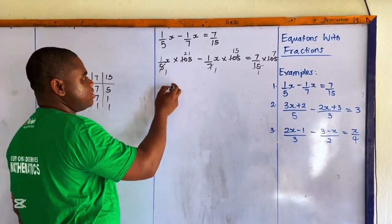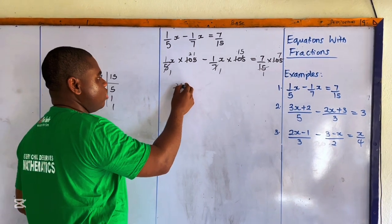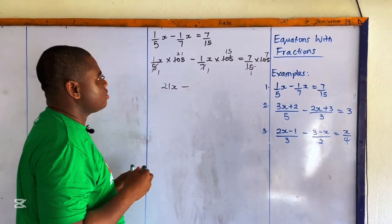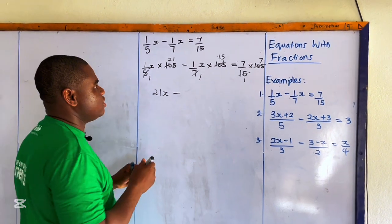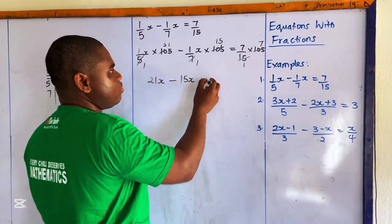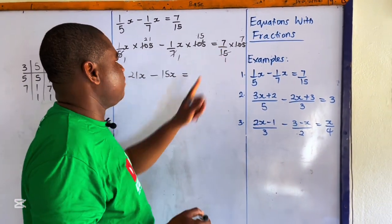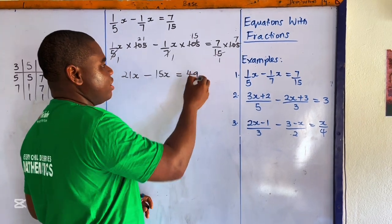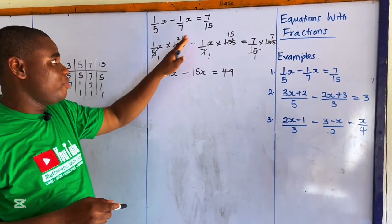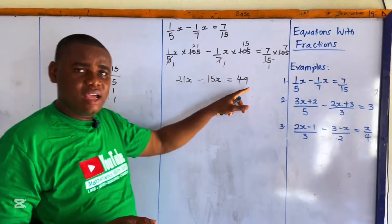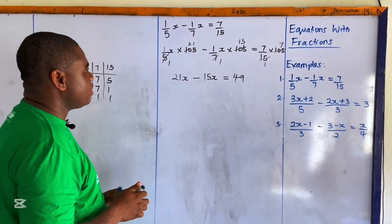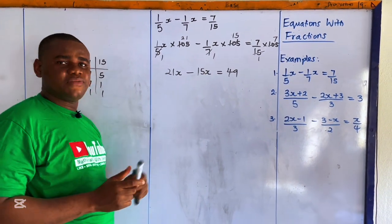This gives us 21 over x minus 15 over x equals 49. The reason we multiplied all three terms by the LCM of the denominator was to make this a linear equation, and this has really helped us. So 21x minus 15x gives us 6x.